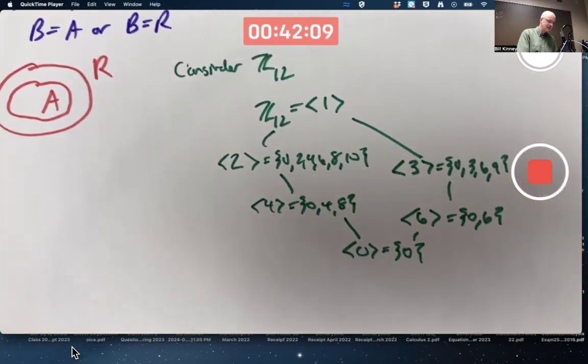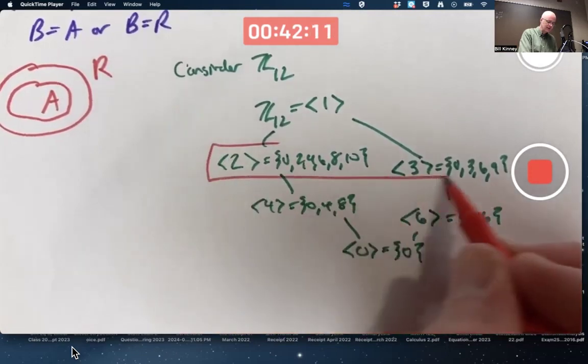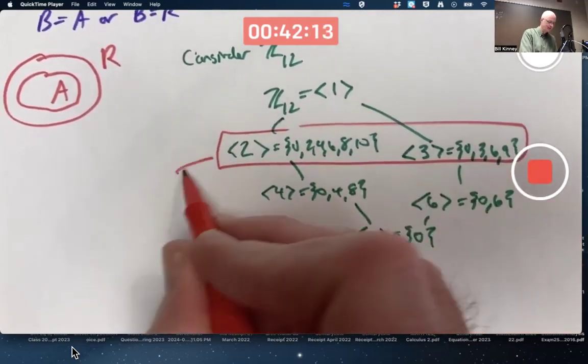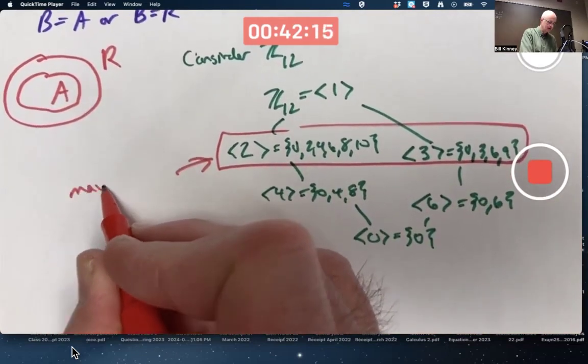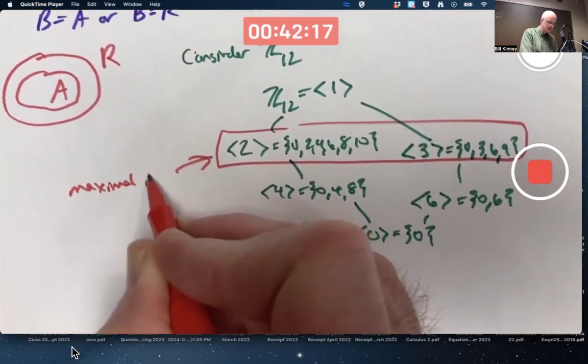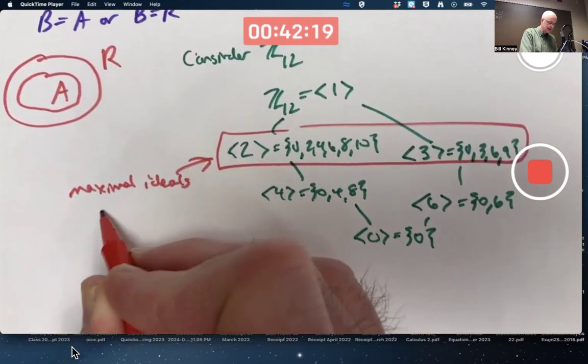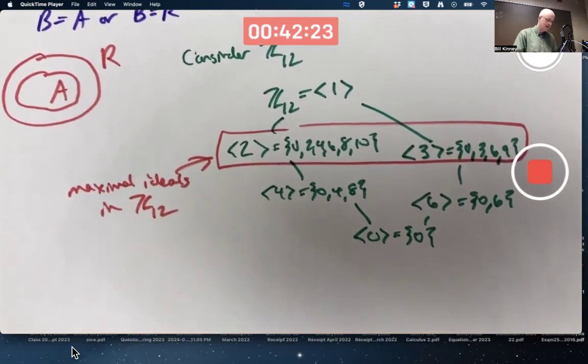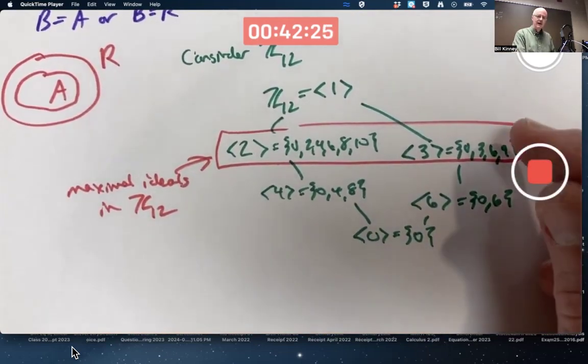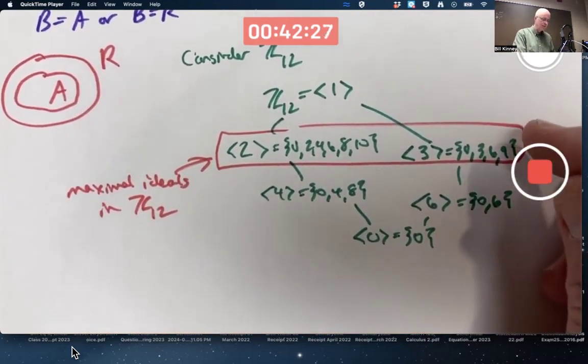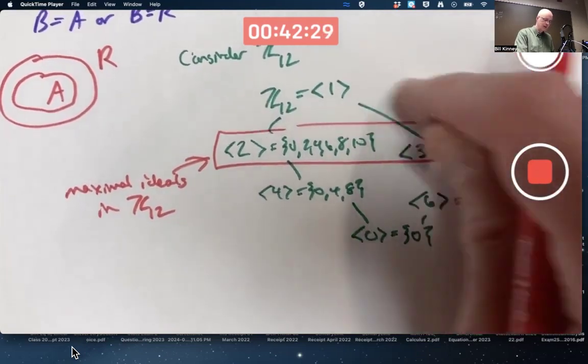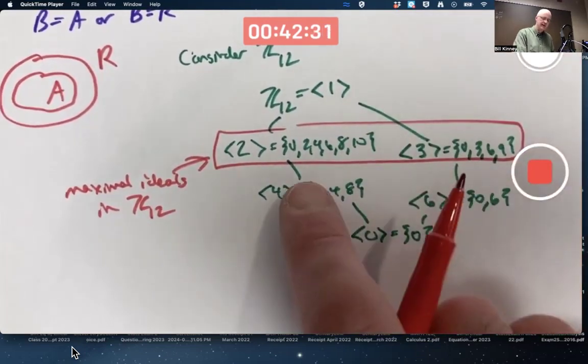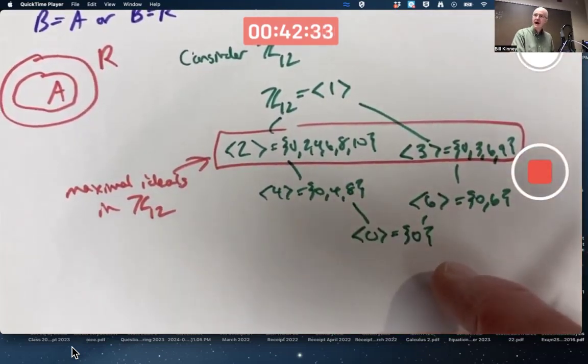These two. Yeah, that means these two are the maximal ideals in Z12. There's no other ideal, no other proper ideals, strictly between Z12 and these ideals. They're both maximal ideals.